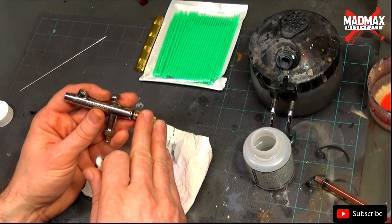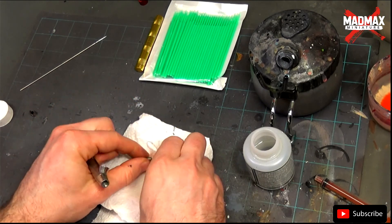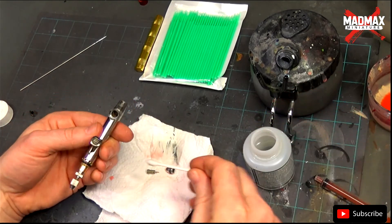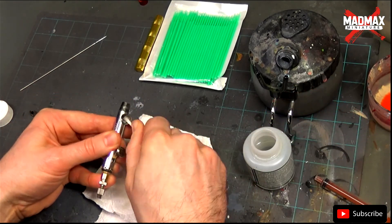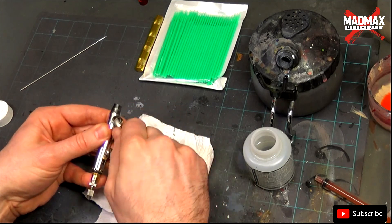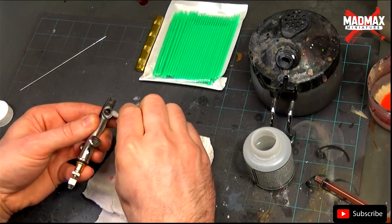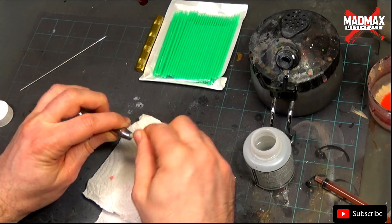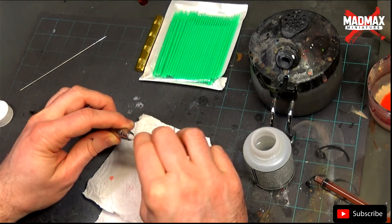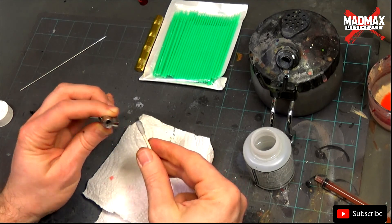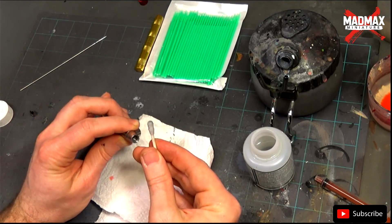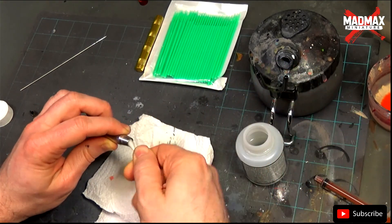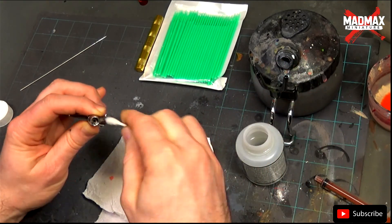Once again, I use a Q-tip and airbrush cleaner to make a big cleanup of the inside. Once it's done, check with some good lighting if there is no residue left in the airbrush.